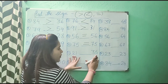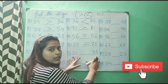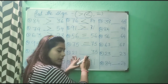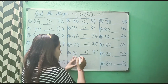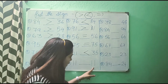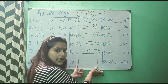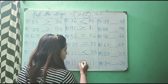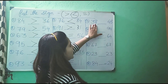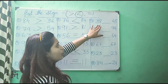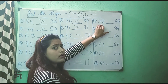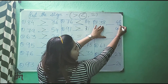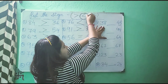Now see, 21 and 35 — which is the bigger one? 35. So 21 is less than 35, so we will put less than sign here. Again, 11 and 11 — these are the same numbers, right? So we will put equals to. Again see, 38 and 45 — 38 is smaller from 45, so we will put less than sign.